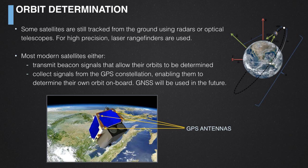Orbit determination is the next challenge. You need to know where your satellite is in orbit; in some cases this is done externally using radars or telescopes on the ground. But increasing numbers of modern satellites, especially in low Earth orbit, use GPS receivers — acting as mobile subscribers to the GPS signal — and determine their own position to an accuracy measured in single-digit meters, more precise than ground-based radar tracking. In the future, other navigation systems like Galileo will also be exploited to provide precision orbit knowledge.